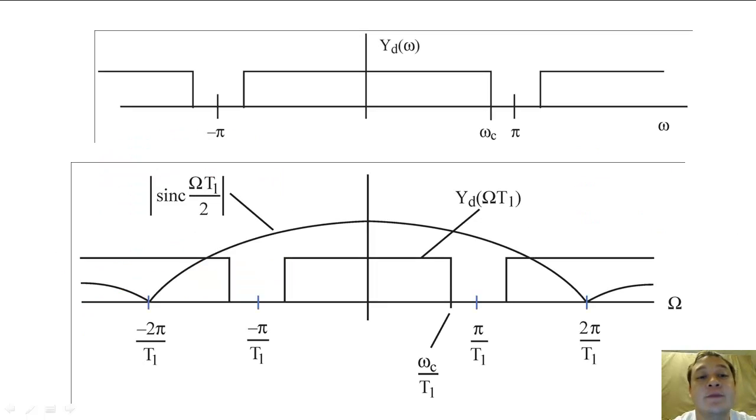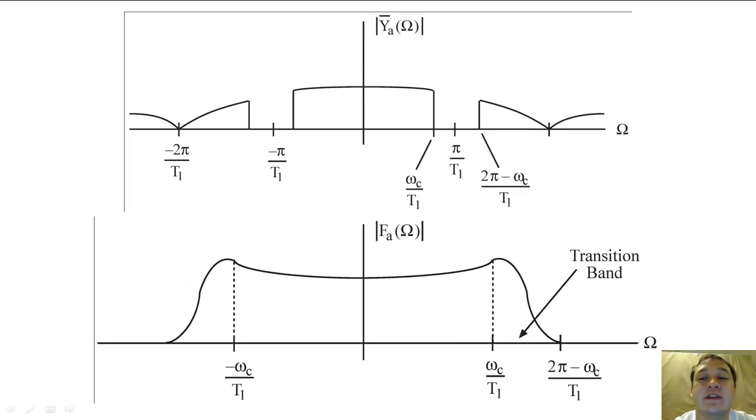As a reminder, when we pass our digital filter output through a zero-order hold component, we multiply Y sub D by a sync function. After Y sub N is passed through the zero-order hold, we need to filter Y sub N with a low-pass filter that emphasizes the higher frequencies.